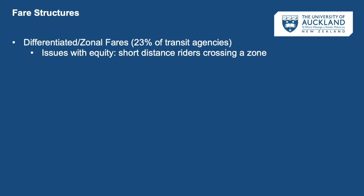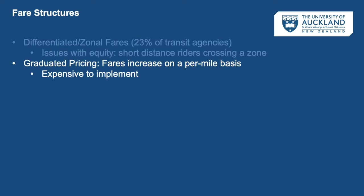The second most common way transit agencies structure fares is through differentiated or zone-based fares — about 23% of agencies take this approach. While this structure can be more equitable, there are still equity concerns where short-distance riders living close to a zone boundary may cross it and pay a higher fare than those farther from a zone border. In graduated pricing, fares typically increase on a per-mile basis, but this is very expensive to implement — it requires tracking each mile traveled, technology to swipe in and out, and systems to calculate and charge fares on the fly.